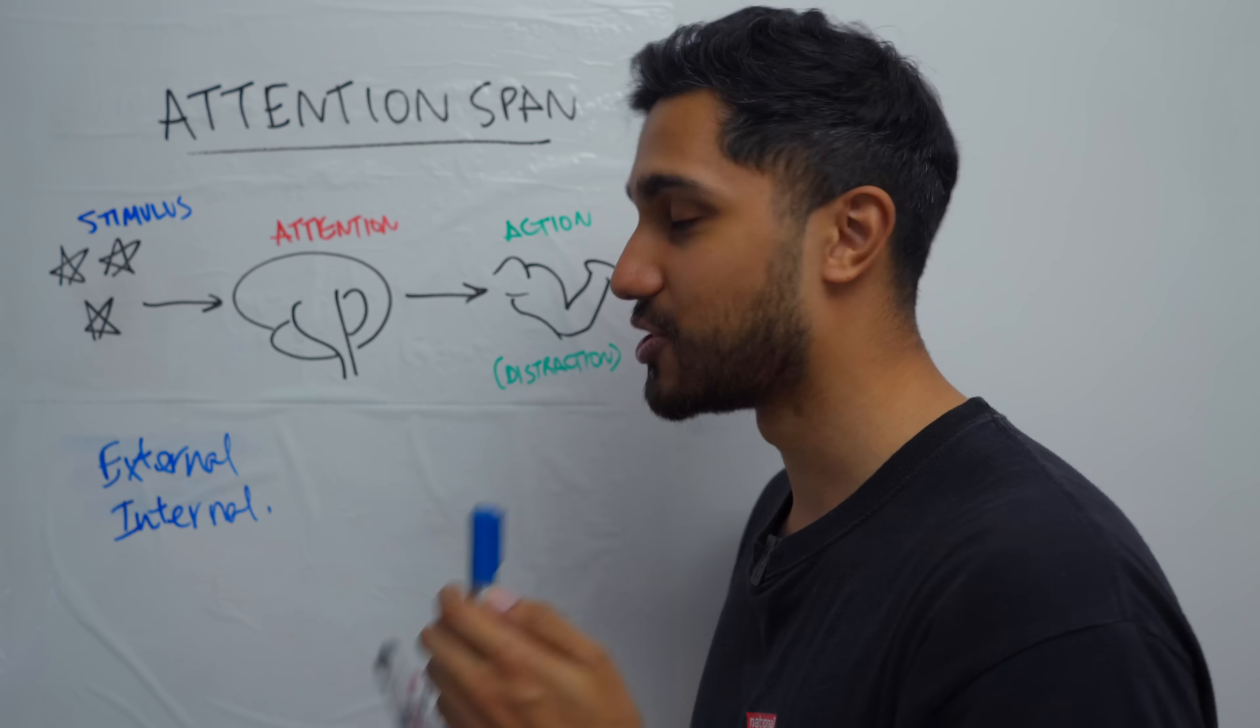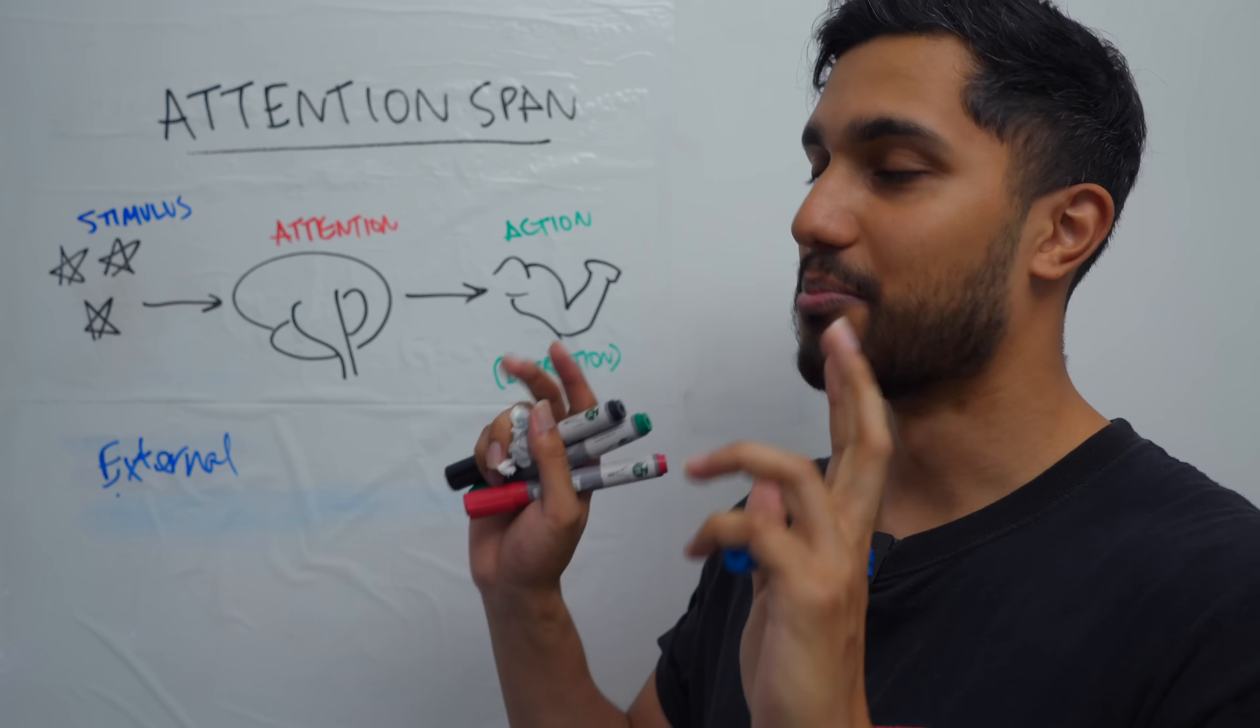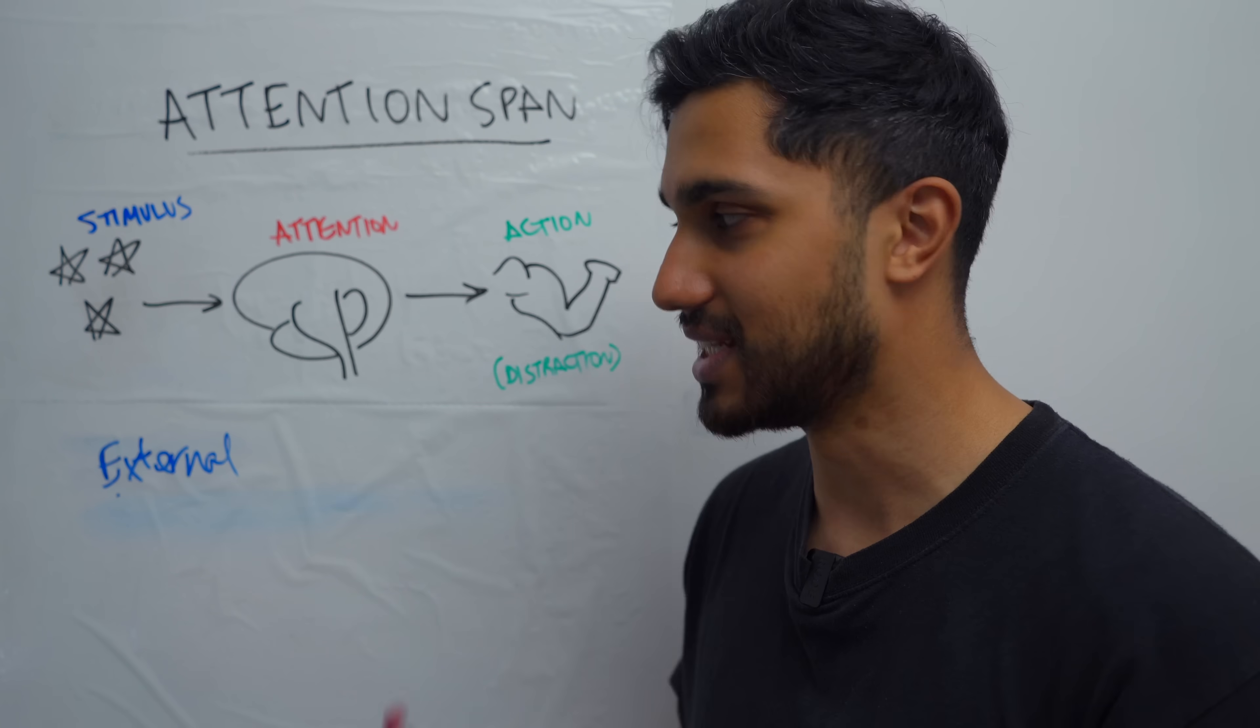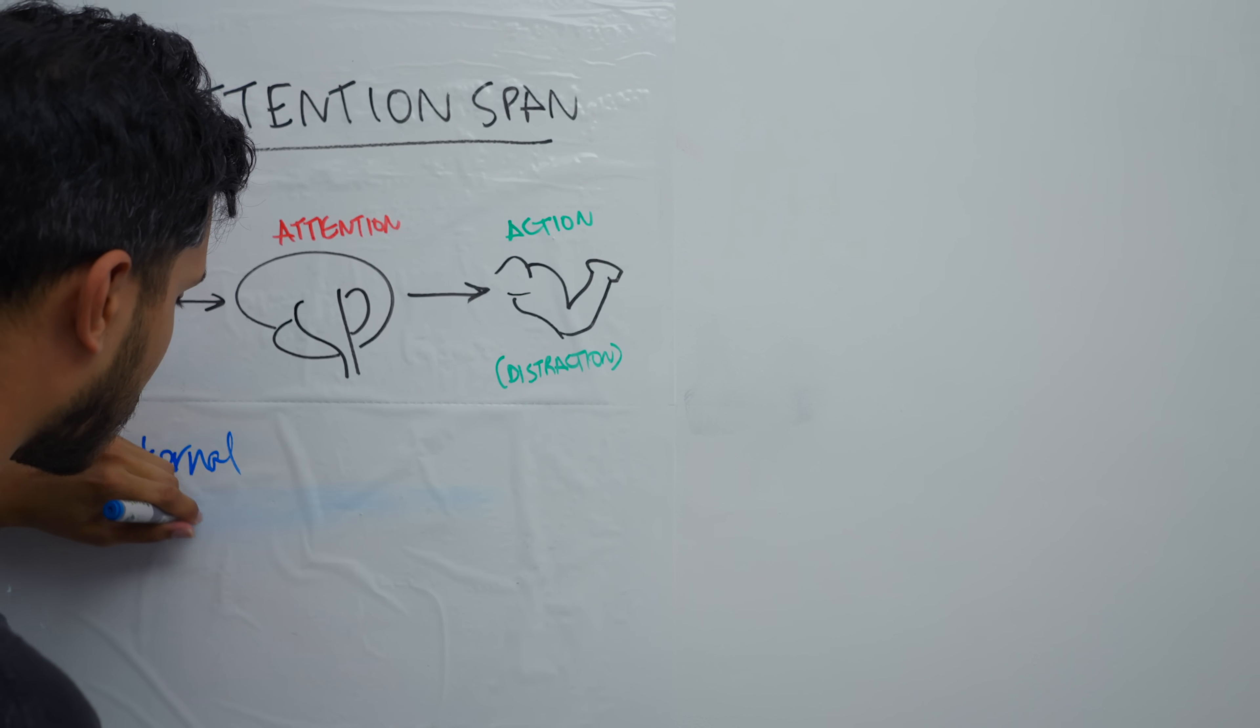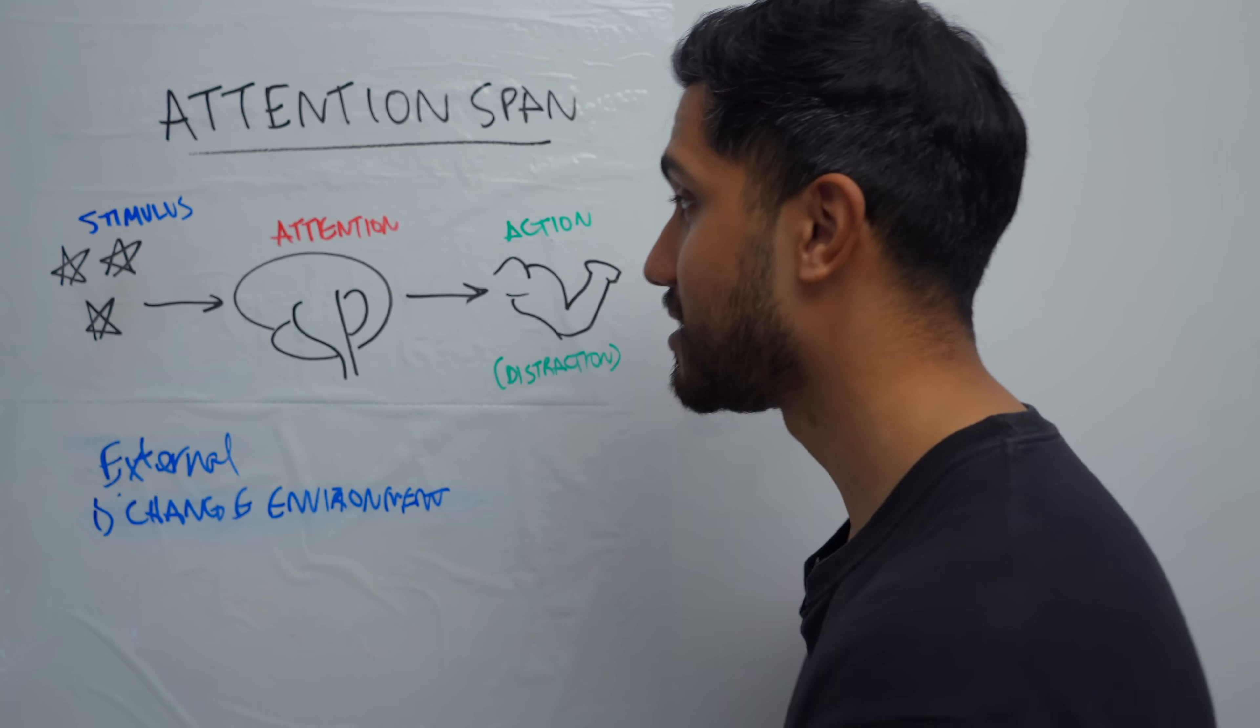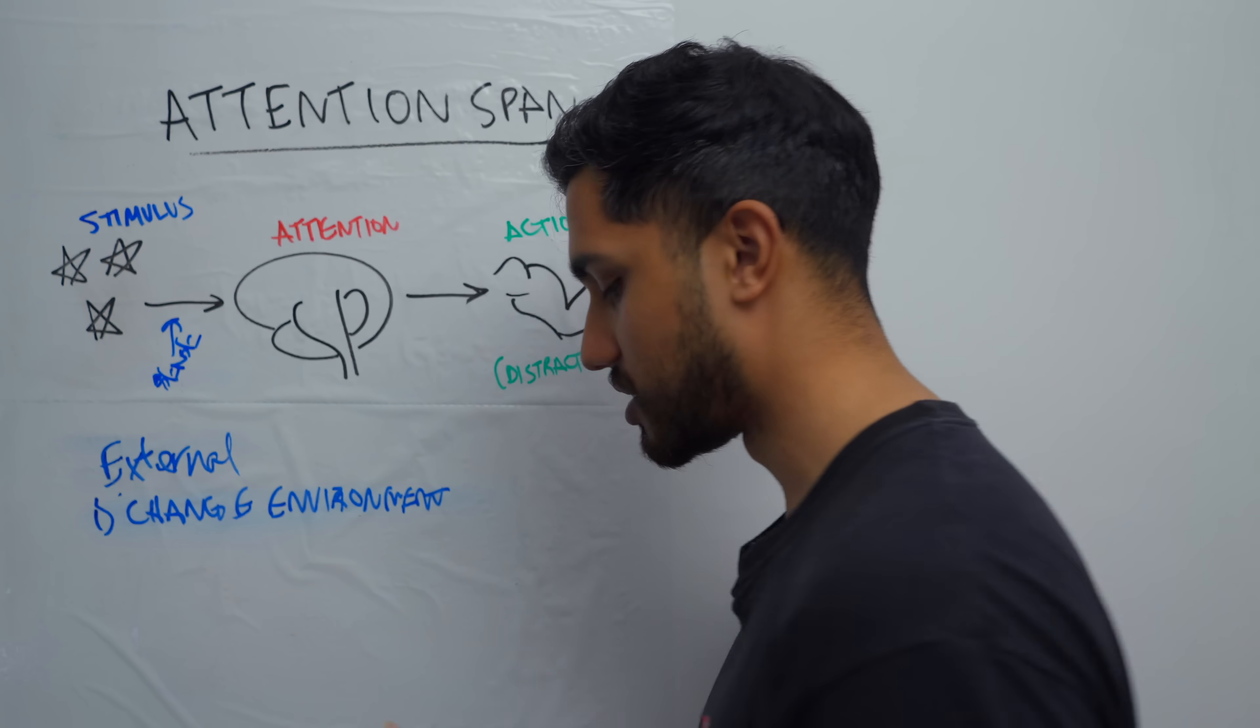But that's why as humans, we can get so distracted. So the first practical thing that we can do to improve our attention and improve our attention span, but really it's about decreasing your distractibility, is what most people normally say. They say to change your environment because then you don't have as many things coming into your senses that normally distract you.